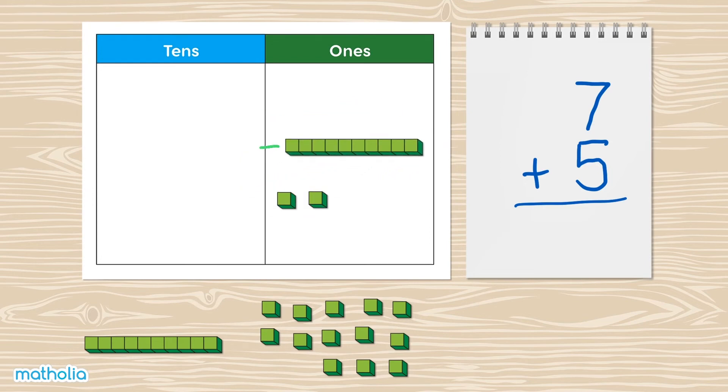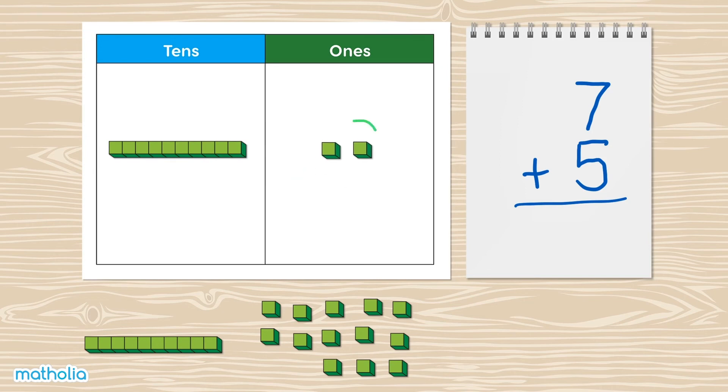Move the 10 to the tens column. And we can see that we are left with 2 ones and 1 ten.